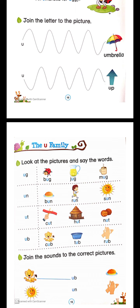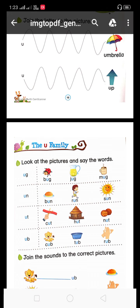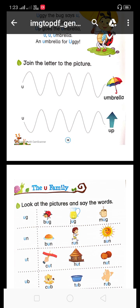Aapko pata hoga na, U family me kaunse words hai? Aise bahut saare words hain jis me U use hota hai — bug, jug, mug, bun, run, sun, cut, hut, nut, cub, tub, rub. Inko aap loog apni copy me note out kariye. Aapke test bahut nazdik hai — kisi bhi din test lenge. Aap loog aise ko learn kar lijiye. Copy pe note out karate rahiye aur copy ki pic WhatsApp karo. Student, you will learn and note in your notebook. So thank you, my student. Have a nice day. Keep watching. Be safe.